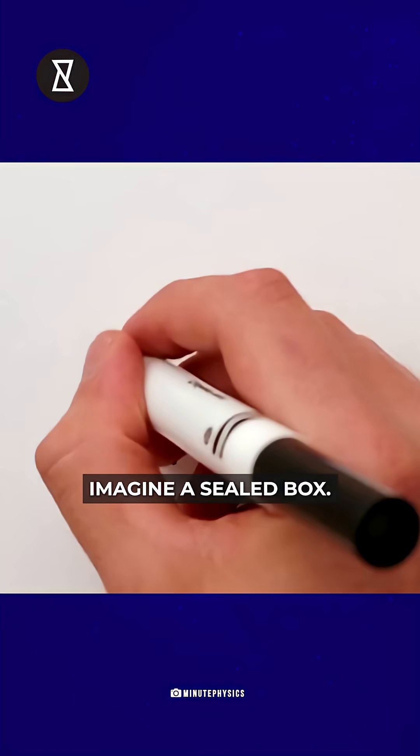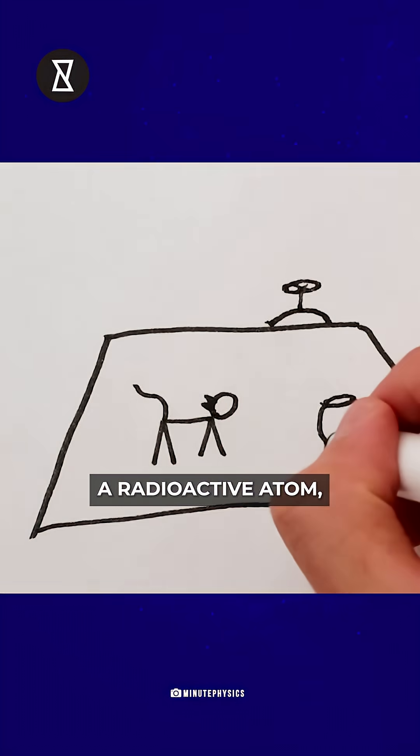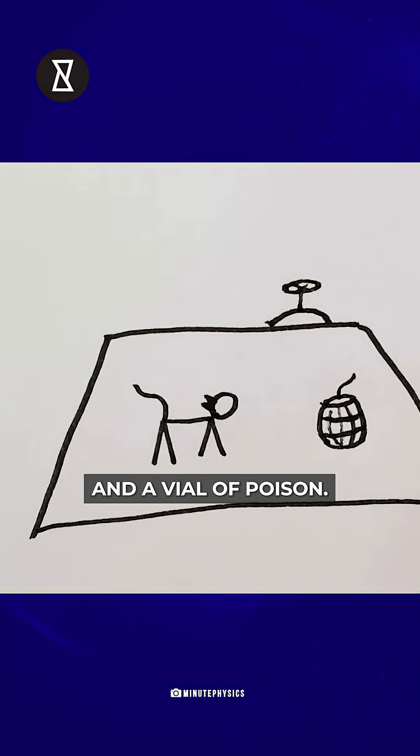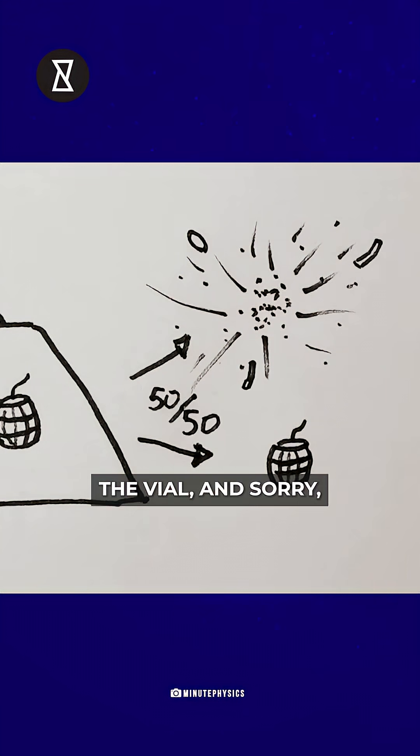Imagine a sealed box. Inside is a cat, a radioactive atom, a Geiger counter and a vial of poison. If the atom decays, the Geiger counter detects it, breaks the vial and, sorry, the cat dies. But